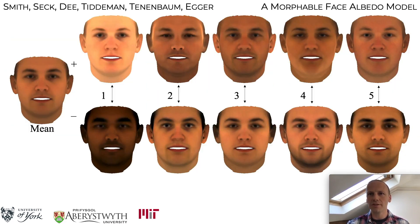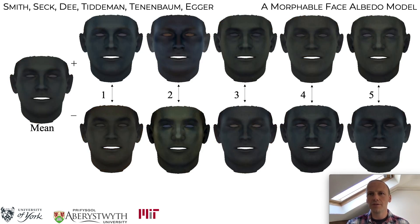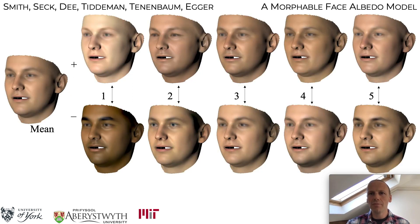We can now build our statistical model by applying PCA to the albedo maps. Here we show the first five modes of the diffuse model. Note the much richer variation in skin colour relative to previous models and the complete removal of lighting effects. We do the same for the specular model, and we believe this is the first time the statistical variation of these maps has been explored. Combining the two models, rendering with a reflectance model in a point light source, and applying non-linear gamma, we arrive at a more natural visualisation of the model.